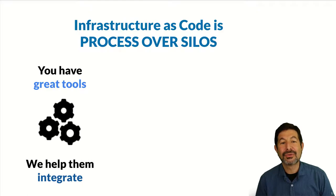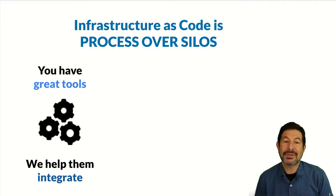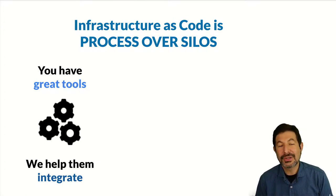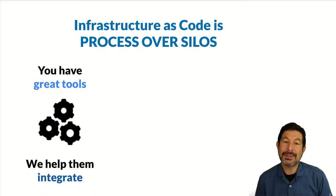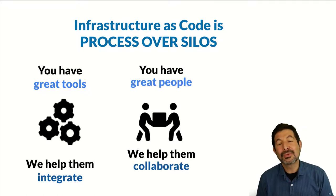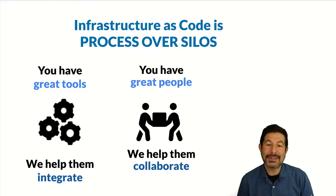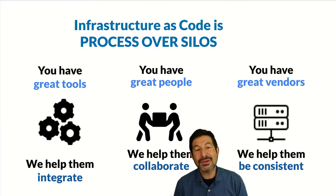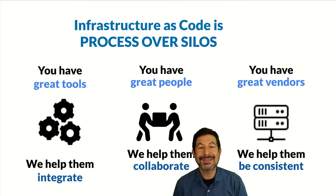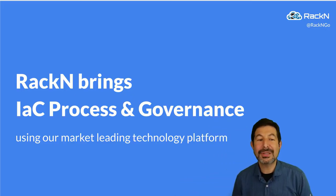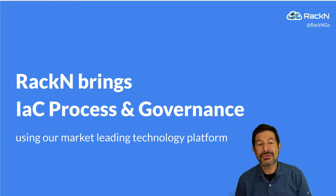All of this together allows us to look at infrastructure as code as a straightforward business advantage philosophy that builds process over silos. We know our customers have great tools, and we help integrate them together. We know they have great people who understand their jobs but need better equipment to collaborate. And we know they have great vendors — whether hardware, cloud, or services — and we help them be more consistent in how those are applied across their organization. We are working to bring infrastructure-as-code process and governance as the primary value.